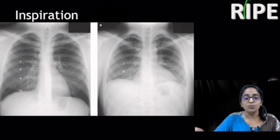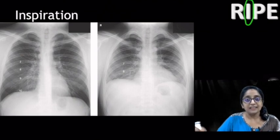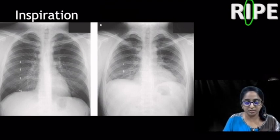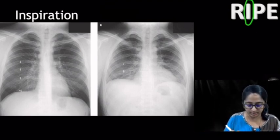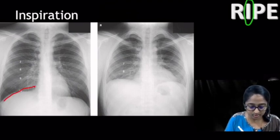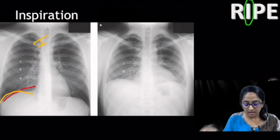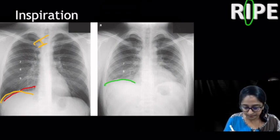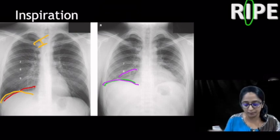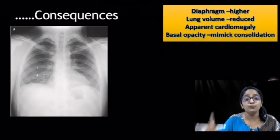Next, assessing the inspiratory and expiratory status of the radiograph. The frontal projection chest radiograph should be taken in adequate inspiration, such that the 10th posterior rib cuts across the dome of the diaphragm — this is an inspiratory film. If only the eighth rib crosses the dome of the diaphragm, this is an expiratory film. Let's see the consequences of an expiratory film.